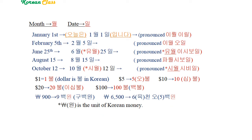Now let's use the numbers in phrases and sentences. The counter for months is 월, and for date is 일. January 1st: 일월 일일. Today is January 1st: 오늘은 일월 일일입니다. February 5th: 이월 오일. 오늘은 이월 오일입니다. June 25th: 육월 이십오일. August 15th: 팔월 십오일.